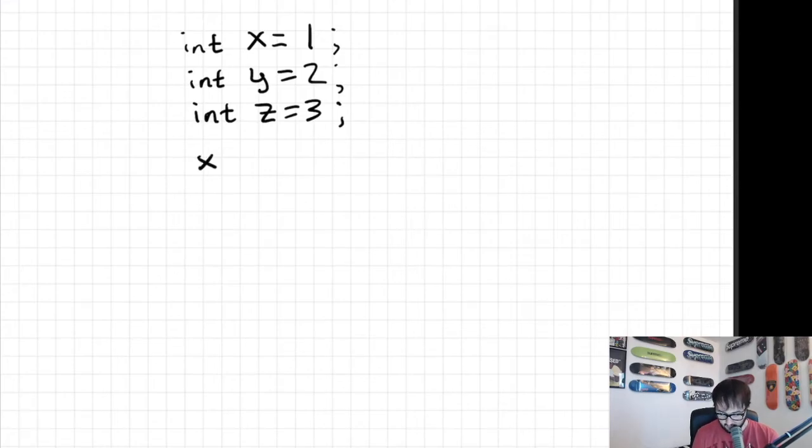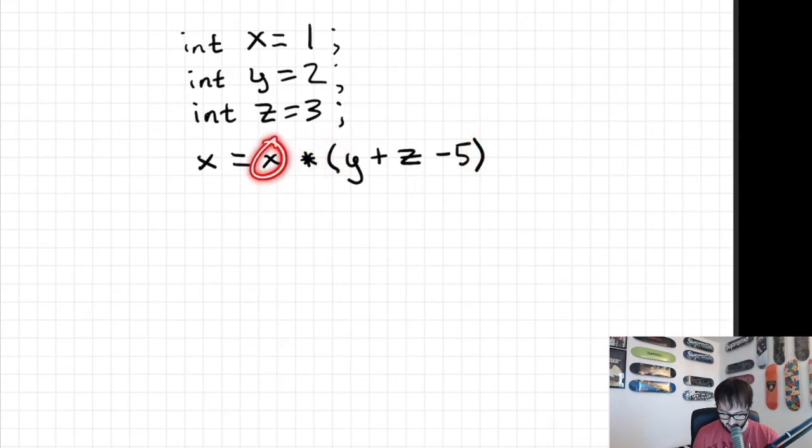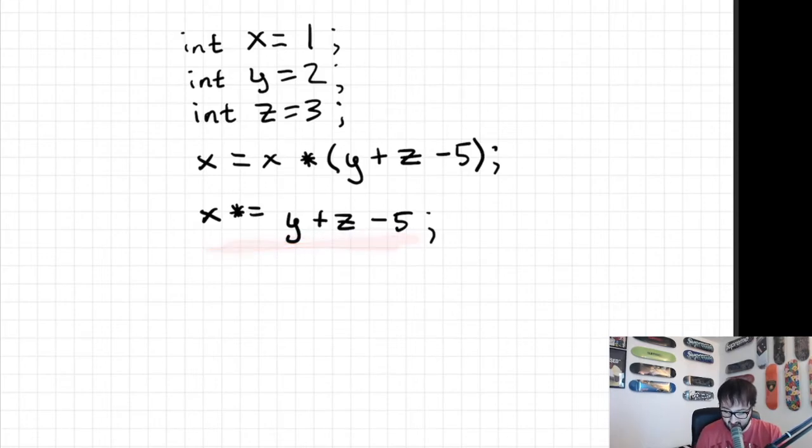And then we could say, x equals x times open parenthesis y plus z minus 5 close parenthesis. Which, instead of going and writing this and having to have this whole precedence thing with the parentheses and an extra x there, we can clean it up by just saying x times equals y plus z minus 5. We don't need that right there, but we do need some of these. And that's going to give us the same exact output as this would give us.